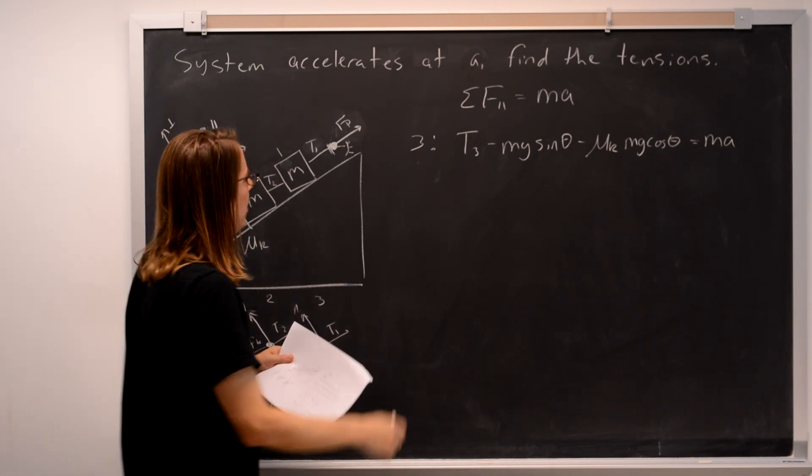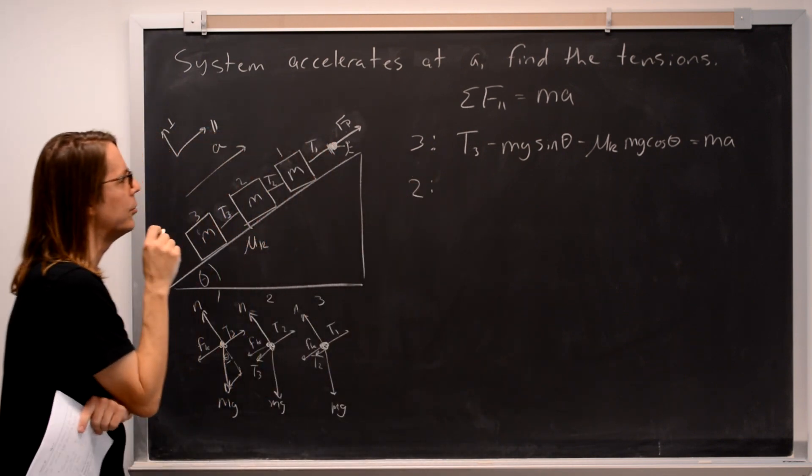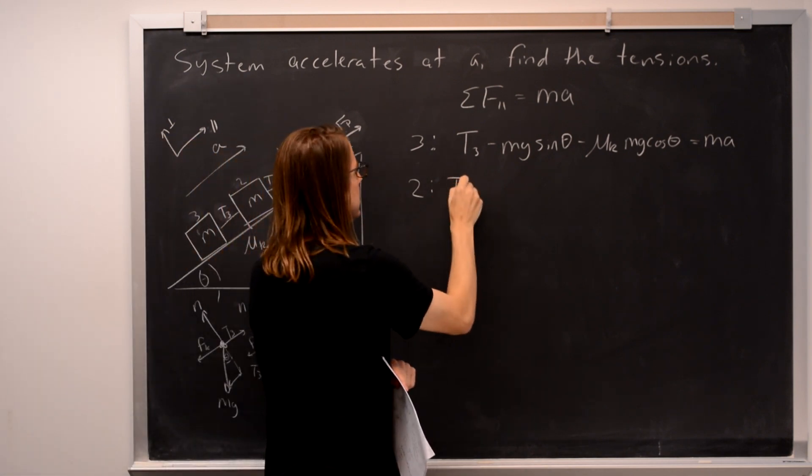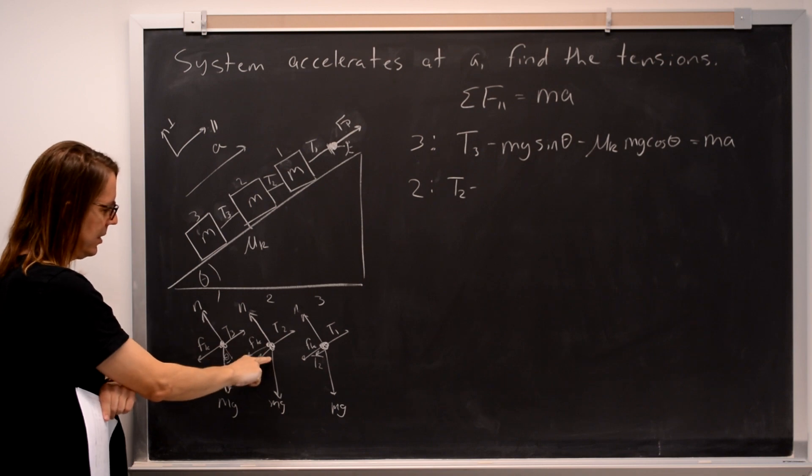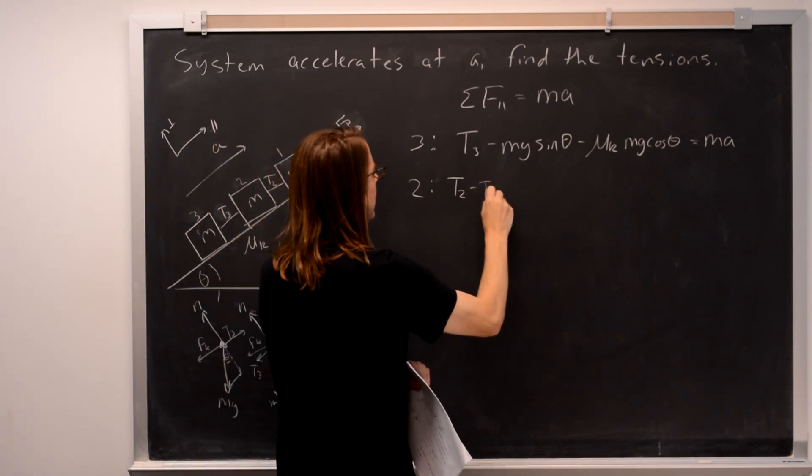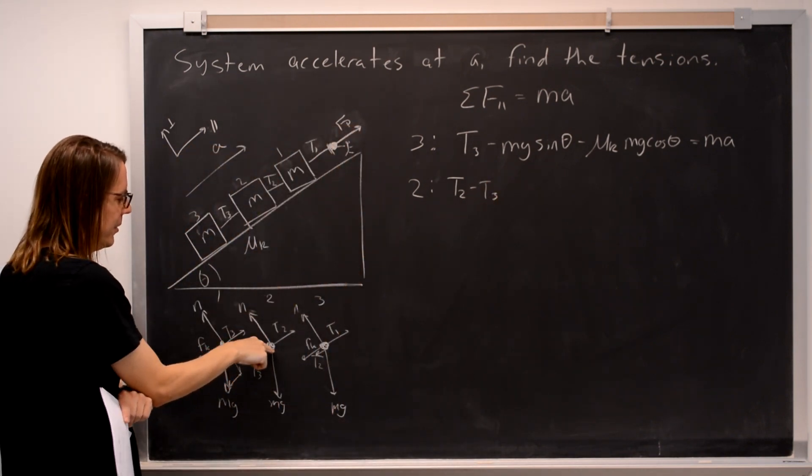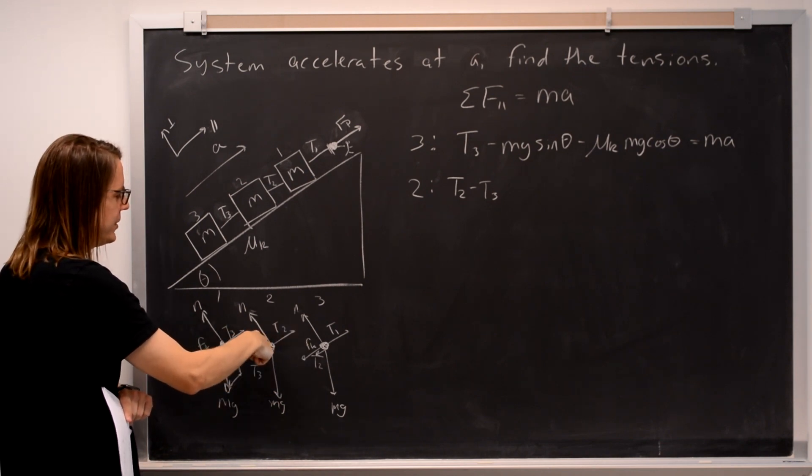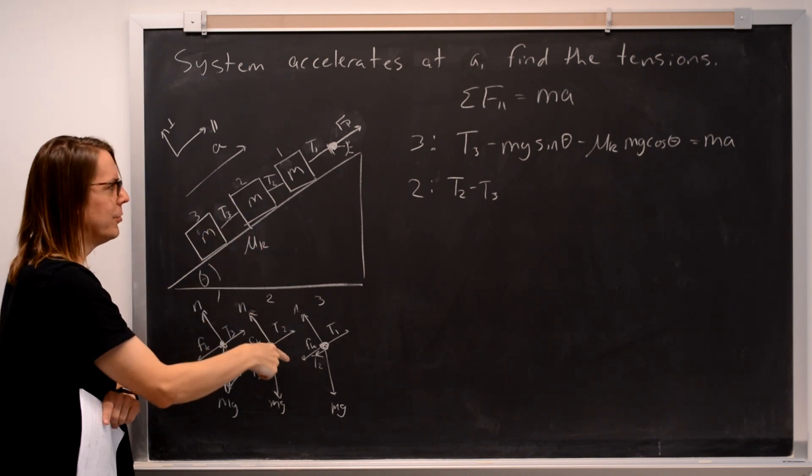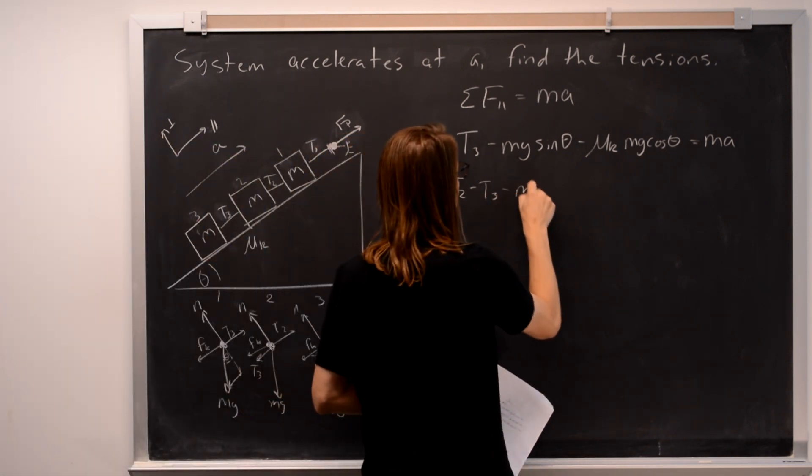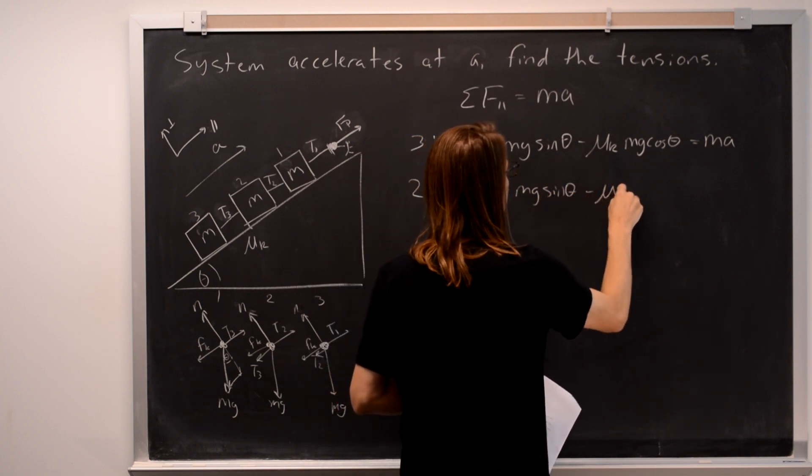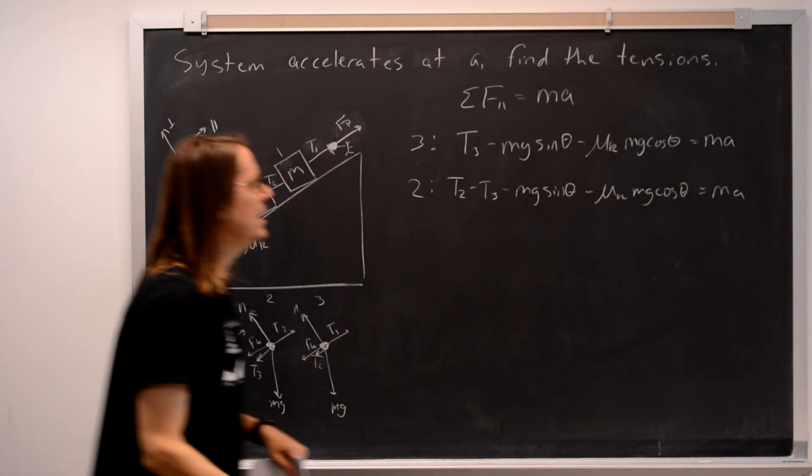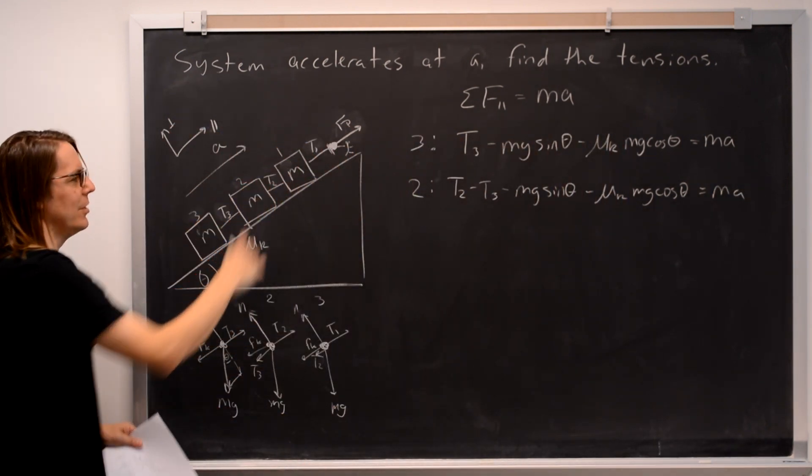And now let's look at number two, the second one. It's feeling a force up the ramp, T2. It's being dragged back by T3. And then the rest is the same. The weight component, mg cosine theta, or mg sine theta pulling it down. And the friction, which is also the same. Mu k, it's the same normal force. So this part is all the same. Minus mu k mg cosine theta equals ma. Even the right side is the same because they're all going with the same acceleration and they're all the same mass.